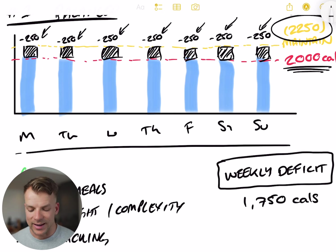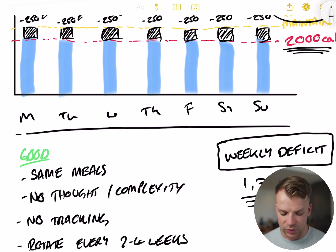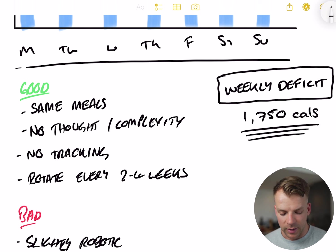A 250 calorie a day deficit ends up being a weekly deficit of 1,750 calories. So that's it on paper. That's the perfect diet. However, it's not that simple. And that's why this training exists. The good thing about eating like this, let's just first cover the pros and cons.